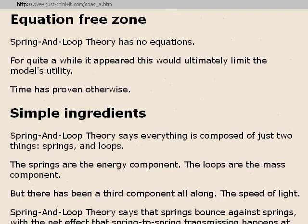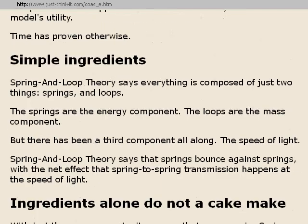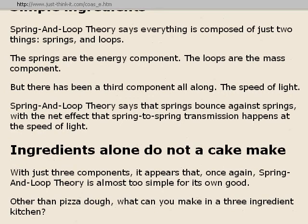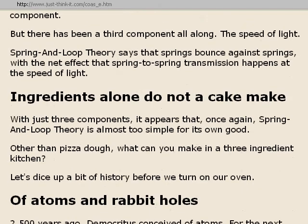But there has been a third component all along: the speed of light. Spring and loop theory says that springs bounce against springs, with the net effect that spring-to-spring transmission happens at the speed of light. With just three components, spring and loop theory is almost too simple for its own good. Other than pizza dough, what can you make in a three-ingredient kitchen? Let's dice up a bit of history before we turn on our oven.